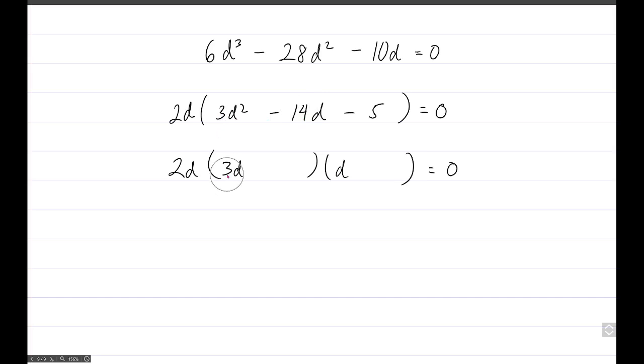And so, look, if we stick the 5 here, then 3d times 5 will be 15d. That's close to 14d, and then 1 there. 1 times d, 15d minus 1d would be a 14d.